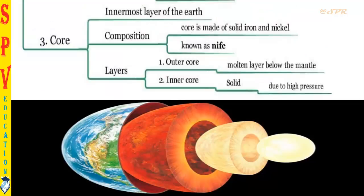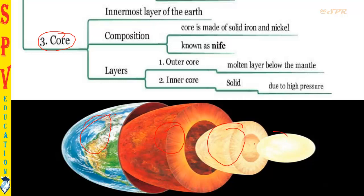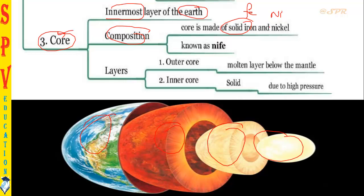Now we come to the core — the center of the Earth. If you skin the Earth layer by layer: the topmost is the crust, then you get the mantle, then the outer core, and the center is the inner core. The innermost layer of the Earth is the core. Its composition is mostly solid iron and nickel — iron is Fe, nickel is Ni. Because iron and nickel are present in the core, we call it 'Nife.' The core is also known as 'Nife.'